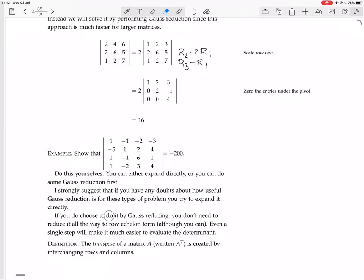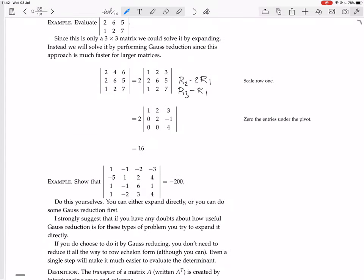And in a sense, if you do it by Gauss reducing, you don't need to reduce it all the way to row echelon form, although you can. Even a single step will make it much easier to evaluate the determinant. So let's evaluate this. Well, try it yourself first, please. But then, once you've done that, come back to this video and see if you agree with me, or if you do it the same way or a different way. But in any way, you should get the same thing, minus 200.